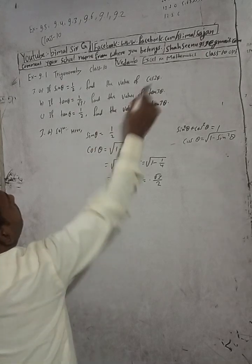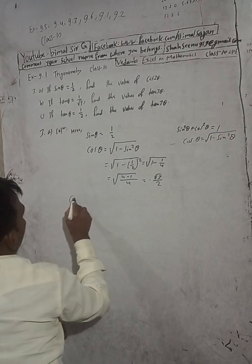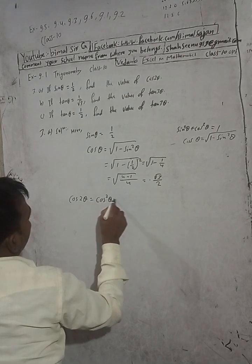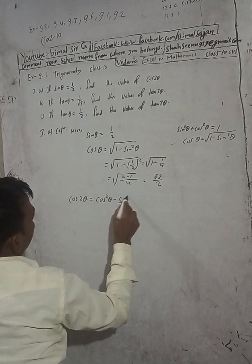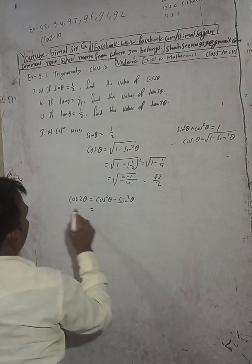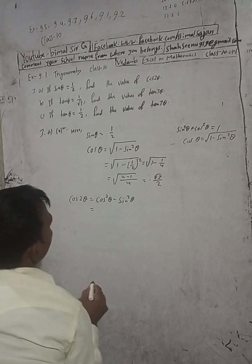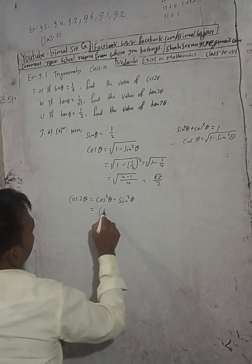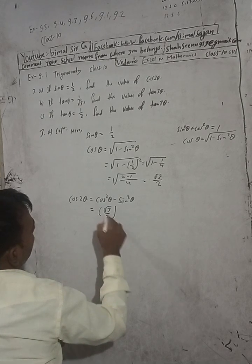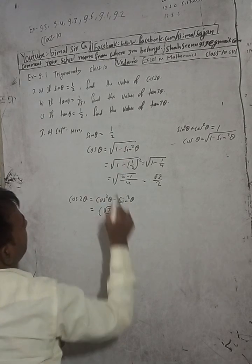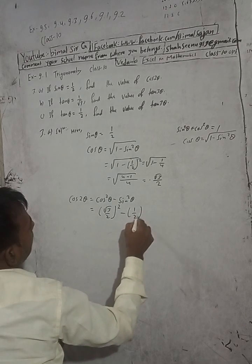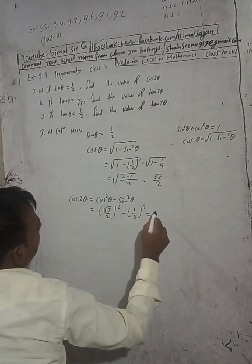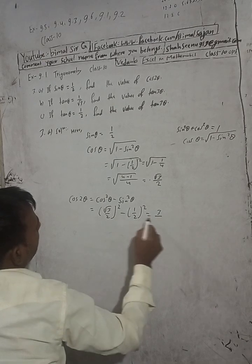Now find the value of cos theta. cos 2 theta is equal to the formula: cos squared theta minus sin squared theta. cos theta is equal to root 3 by 2, whole square, minus sin squared theta equal to 1 by 2, whole square.